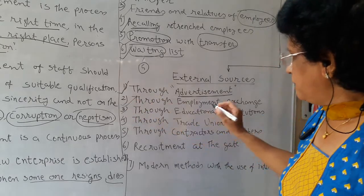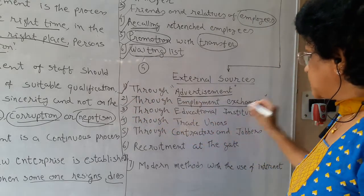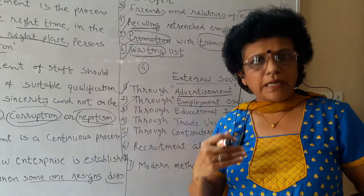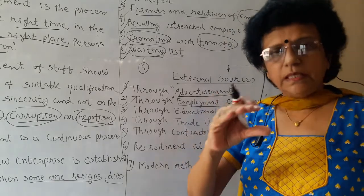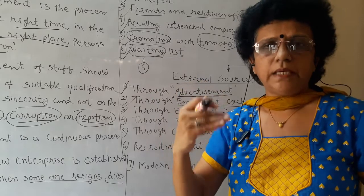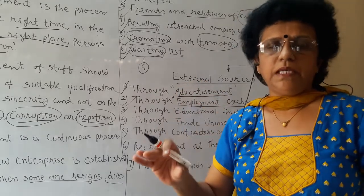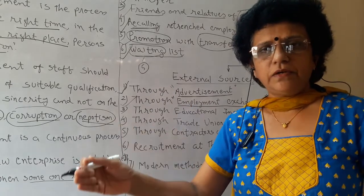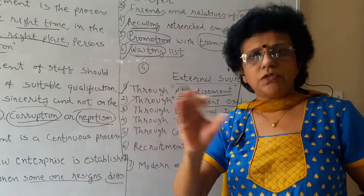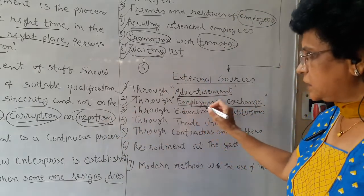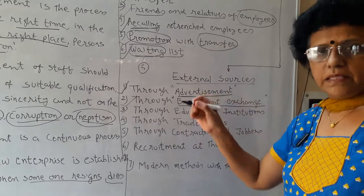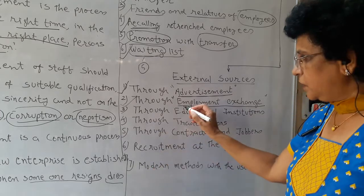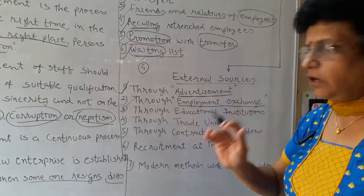Number two is through the employment exchange. Employment exchanges are run by the government, and private employment agencies also work in this sector. The employment exchange keeps enrolling available names of the labour force in various fields — commerce, science, and others. You approach them, state your requirements, and ask how many names they have ready and can recommend. Through an employment exchange, you get a good number of employee listings.